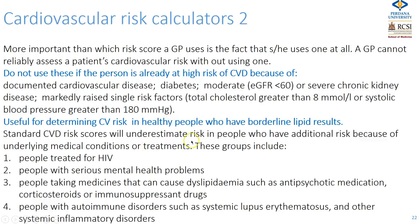Some patients will have their risk underestimated by these score charts due to additional risk factors not captured, including people treated for HIV, those with serious mental health problems, those taking medicines that can cause dyslipidaemia such as antipsychotics, corticosteroids, or immunosuppressants, and people with autoimmune disorders such as systemic lupus or rheumatoid disease.